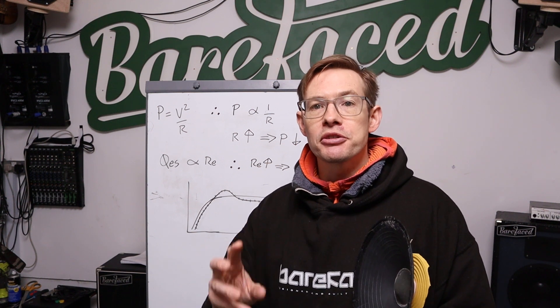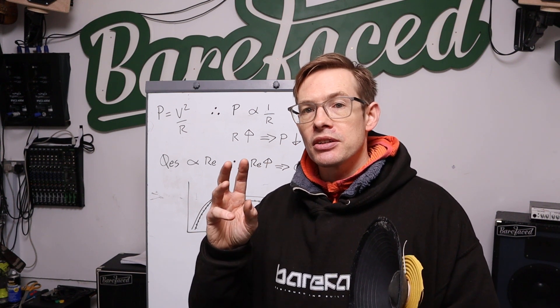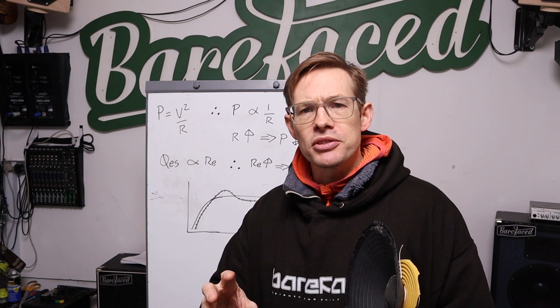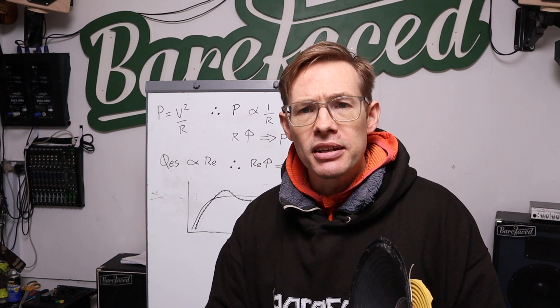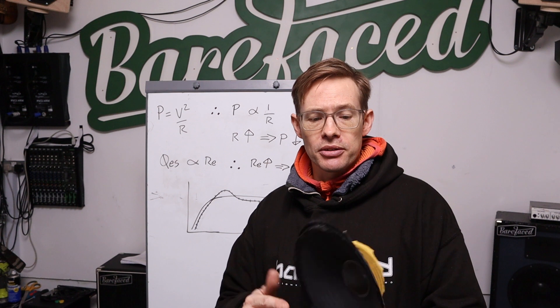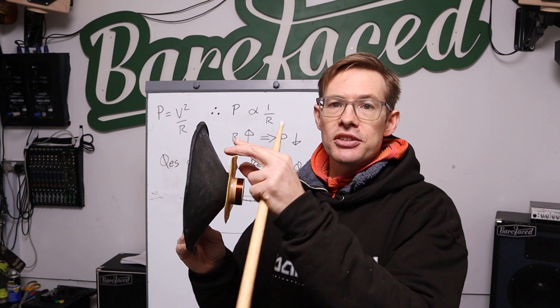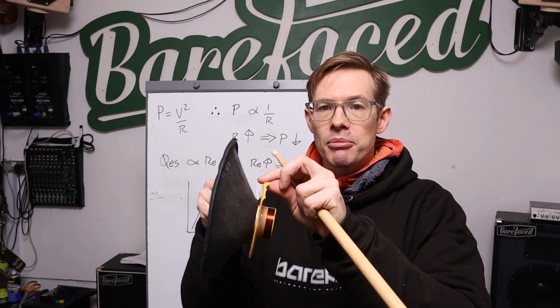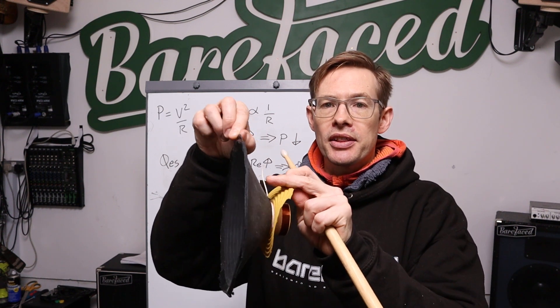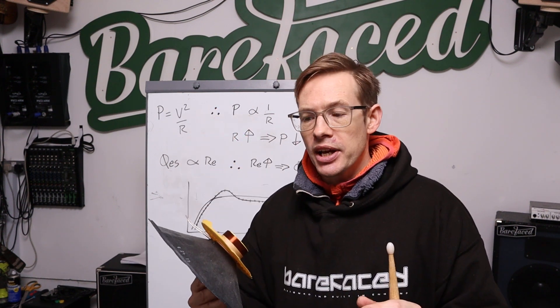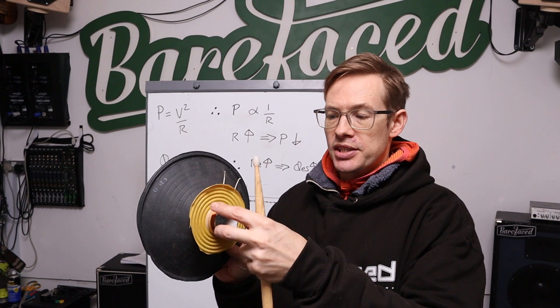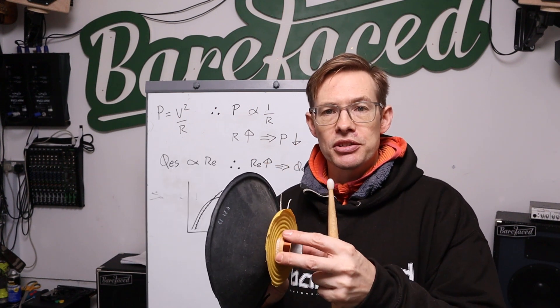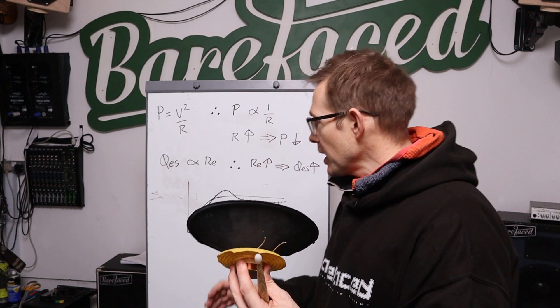Now when you design a loudspeaker cabinet, the total Q which is QTS is a combination of the QES and the QMS. QES is electrical Q and QMS is mechanical Q. Your mechanical Q relates to your suspension, so that's this spider here and this here. And your electrical Q relates to how this voice coil interacts with the motor.